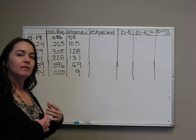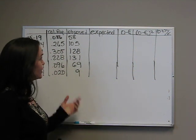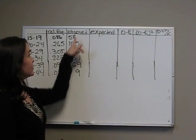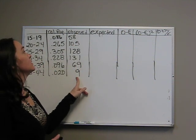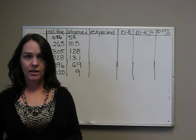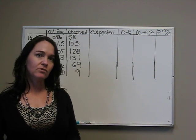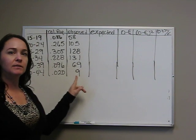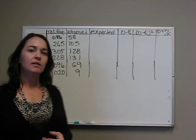Someone has observed 500 new mothers and found their ages. We are given that the probability or the relative frequency of each age group. What we want to do is see if the distribution has changed since 1990. You're always going to be given probabilities and the observations.